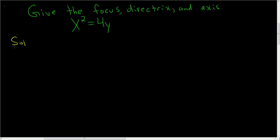Before we go further, let me write down the formula. So this is: x minus h, quantity squared, equals 4c times y minus k. That's the formula we're going to use here for this parabola.